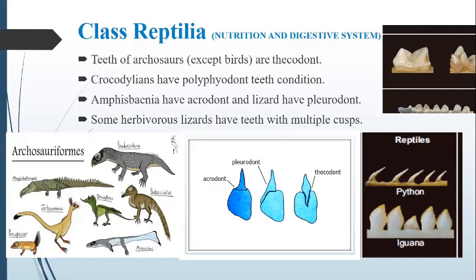Because crocodiles change their teeth up to 50 times in their life, this is the polyphyodont condition. Amphisbaenia have acrodont teeth, and lizards have pleurodont teeth. The acrodont teeth are teeth present on the ridges of a bone socket — no base is present in the socket of these teeth.